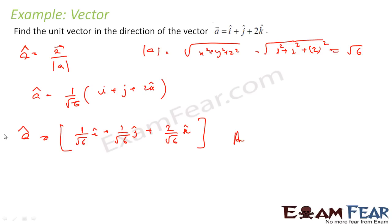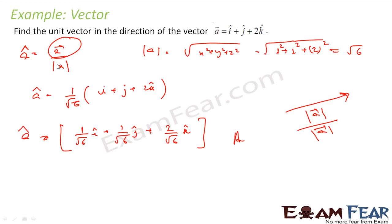Logically, a unit vector is just vector A divided by its own magnitude, making it length 1 while keeping the same direction. So if I had this vector and divided it by |A|, it becomes a vector with length 1 but the same direction — that is a unit vector.